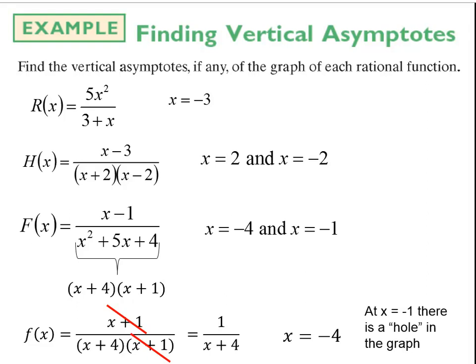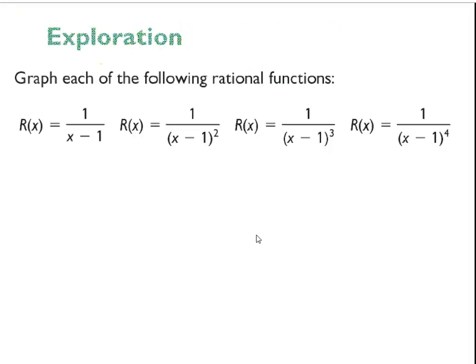In general, to locate vertical asymptotes, we look for division by 0. We want to simplify the rational expression first, because a factor that cancels out of the denominator creates a hole in the graph, not a vertical asymptote. The factor that doesn't cancel creates the actual vertical asymptote.